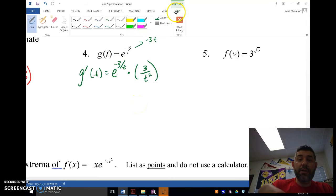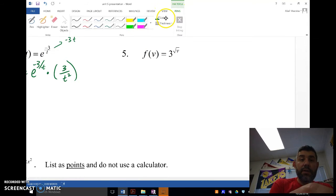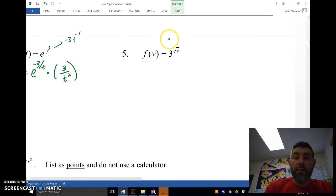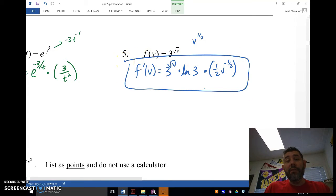So f prime of v is going to be 3 to the root v times ln of 3 times, we got to do the chain rule, so we need to do the derivative of v to the one half, which is one half v to the negative one half. That's all there is to it for doing derivatives of exponentials.